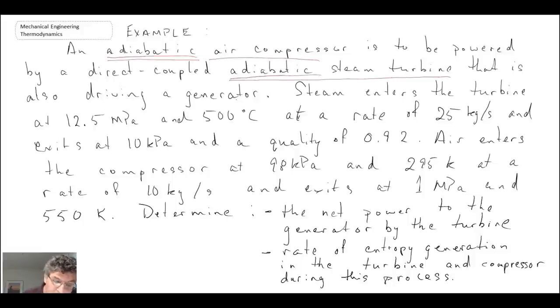For properties, steam enters at 12.5 MPa and 500°C at a rate of 25 kg/s and exits at 10 kPa with a quality of 0.92. Air enters the compressor at 98 kPa and 295 K at a rate of 10 kg/s and exits at 1 MPa and 550 K.